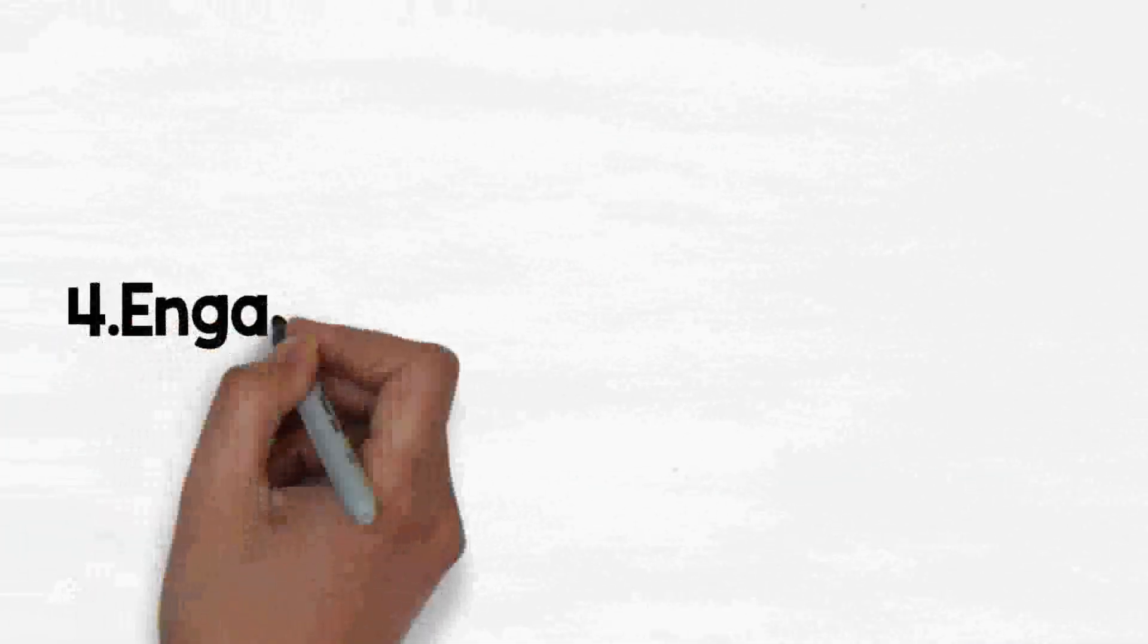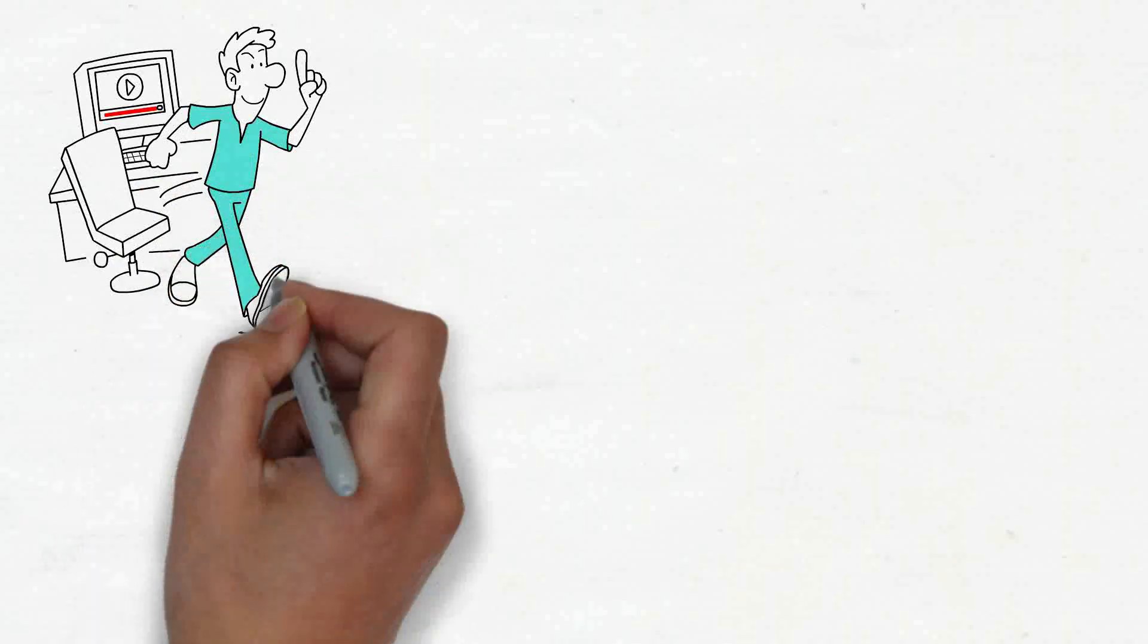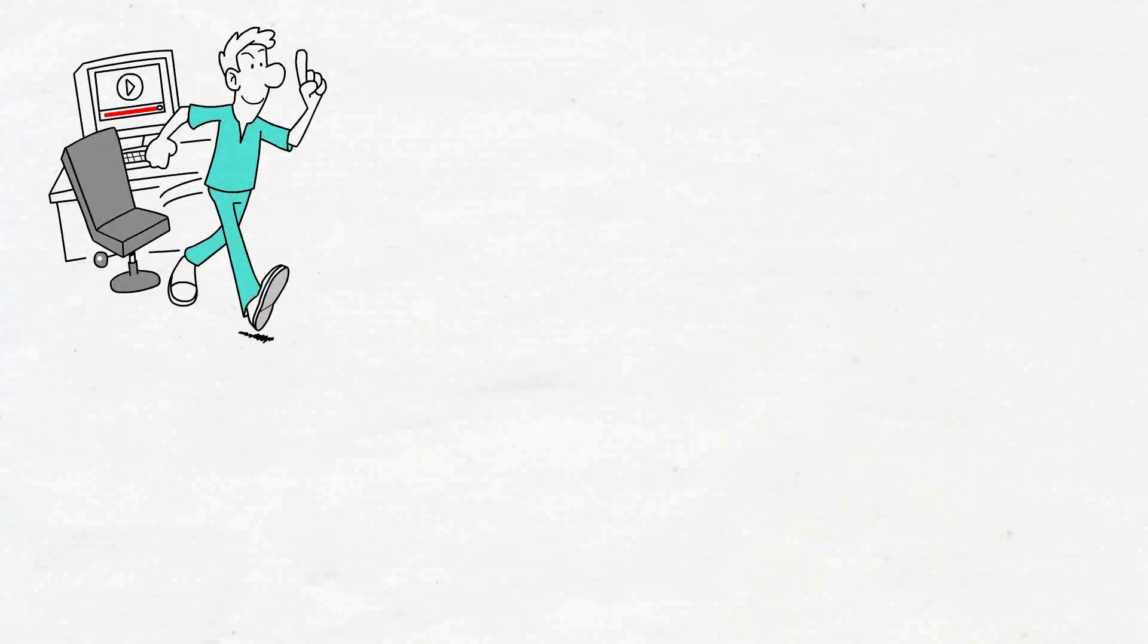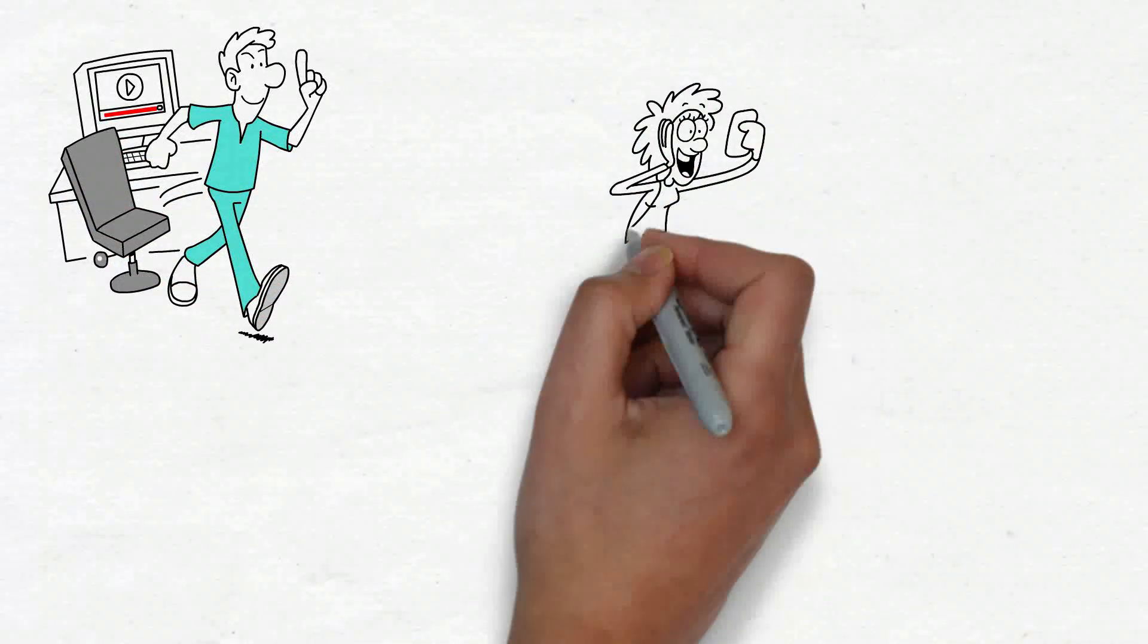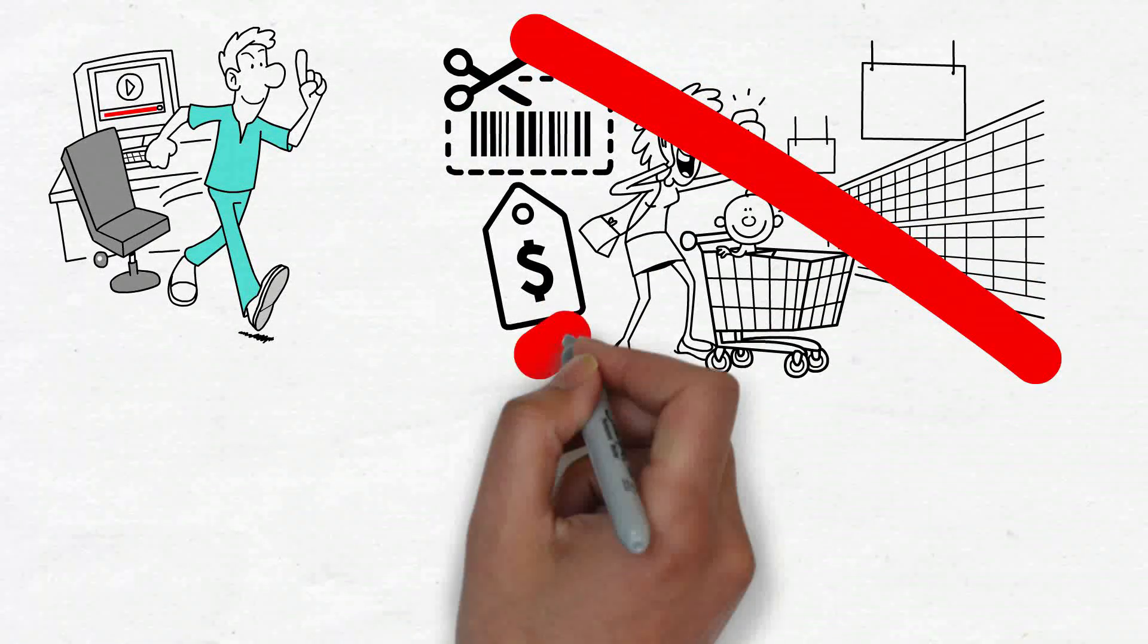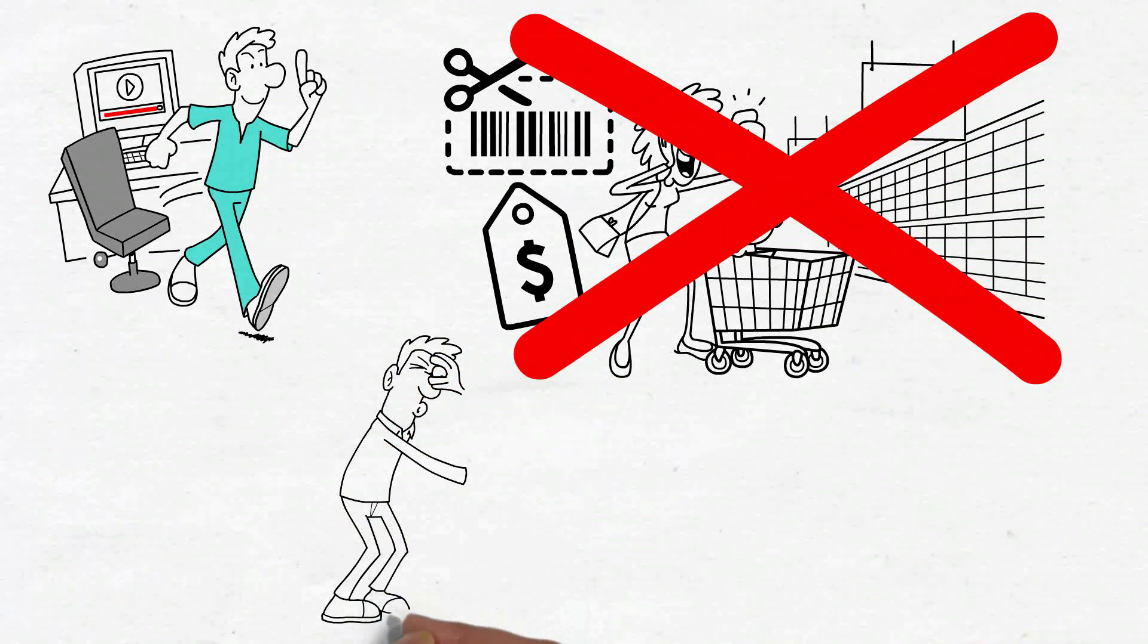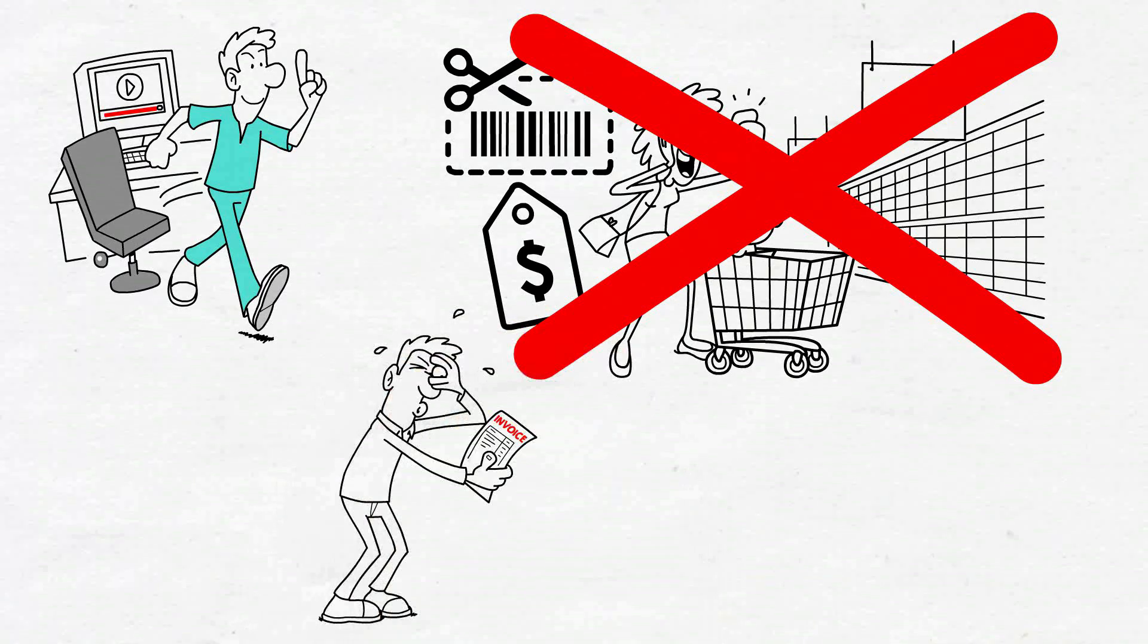4. Engage in a no-spend challenge. When circumstances are dire, action must be taken, and there are occasions when a no-spend challenge is the best course of action. If you've never heard of it, it basically works exactly how it sounds. You don't pay any money on non-essential items. You continue to make payments for expenses like rent or a mortgage, routine bills, electricity, food, etc.